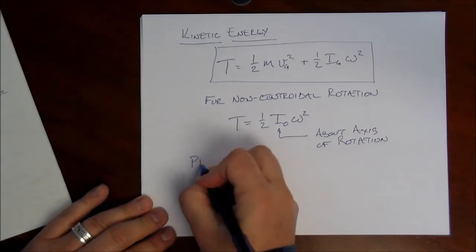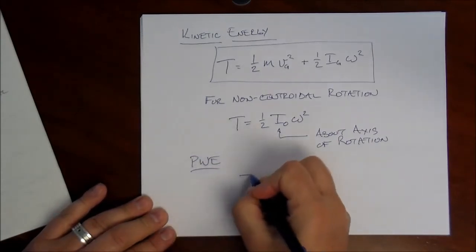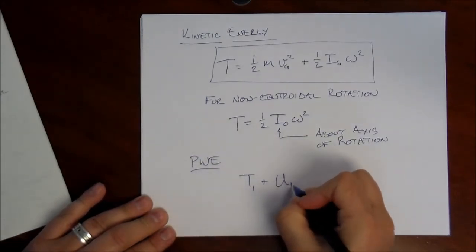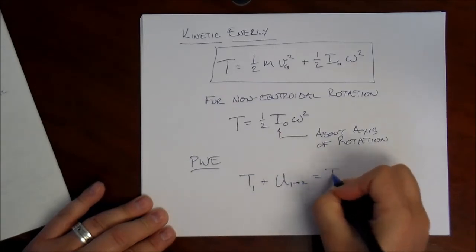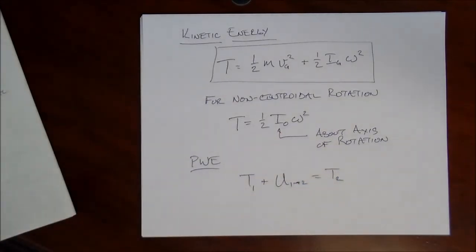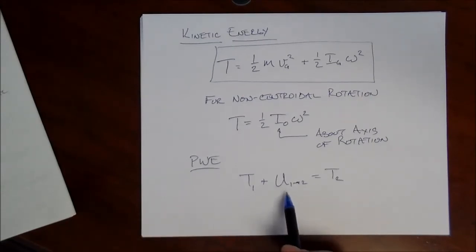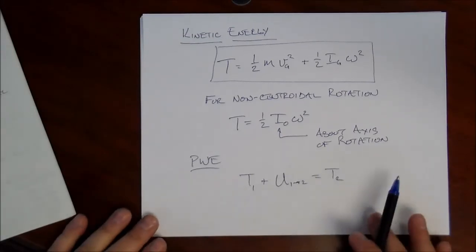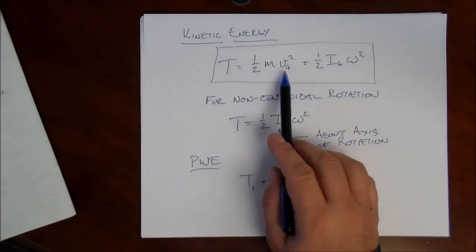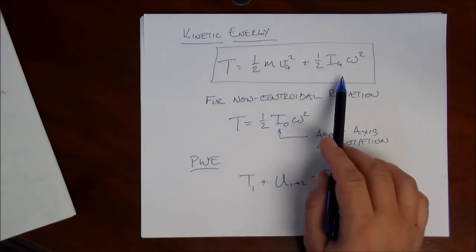So, just going back to the principle of working energy, for rigid bodies in plane motion, the principle of working energy is exactly like we saw for particles. You develop it just the same way. You find the initial kinetic energy plus the work equals the final kinetic energy. The important thing to keep in mind, the kinetic energy now includes not just translation of the mass center, but also rotation about the mass center.